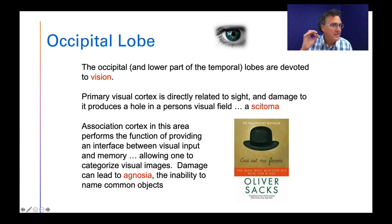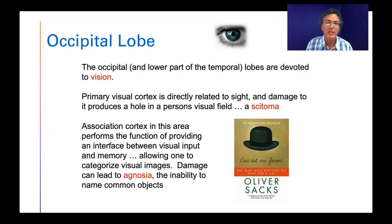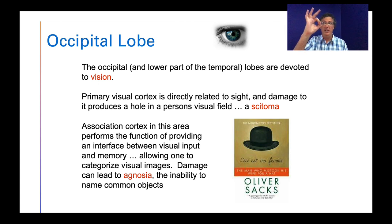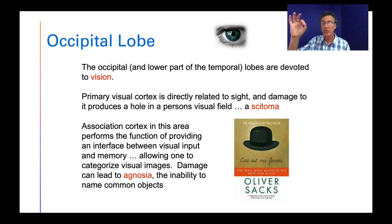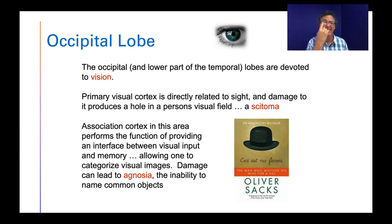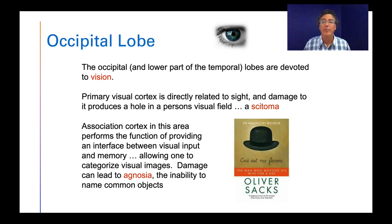If that primary part is damaged — that part just inside the occipital lobes — you end up with something called a scotoma. A scotoma is basically a black spot on your vision. Wherever you look, there's a black spot — almost like somebody stuck a sticker on your glasses so that wherever you turn, you get this black spot you can't see through. That's what happens when the primary visual cortex is affected.